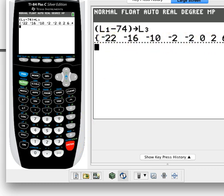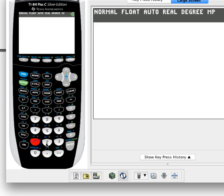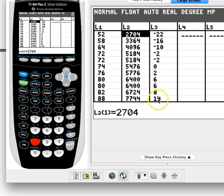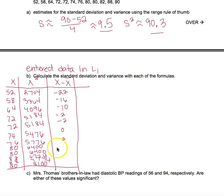The calculator spits out all those nice values. Going into list three I can copy them: negative 22, negative 16, negative 10, negative 2, negative 2, 0, 2, 6, 6, 8, 14, 16.